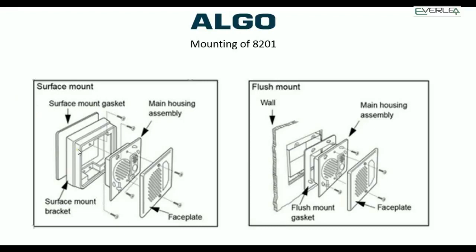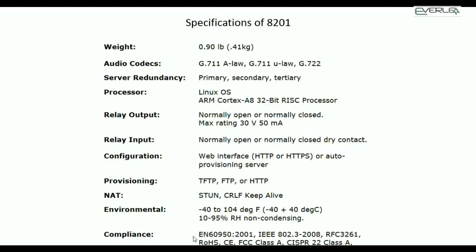Specifications: the unit weighs 0.4kg. Audio codecs supported are G.711a, G.711u, and G.722. It has server redundancy for primary and secondary — if your main voice server fails, the Elgo 8201 will roll over to the secondary. It runs a Linux-based operating system. The relay output is normally open or normally closed, with a maximum rating of 30 volts and 50 milliamps.